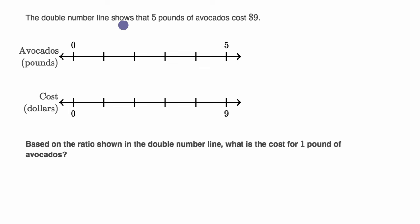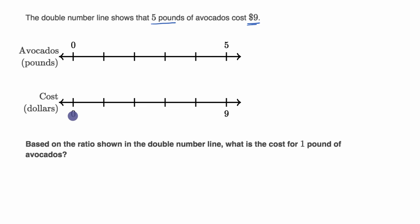We're told the double number line shows that five pounds of avocados cost nine dollars. This shows how as we increase the number of avocados, the cost increases. When we have zero pounds of avocados, it costs zero dollars. When we have five pounds of avocados, it costs nine dollars.